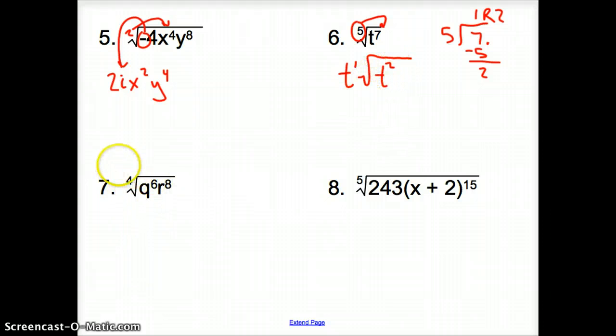Going to 7, same situation. We have an index of 4. 4 goes into 6 how many times? Just once. So we can only bring one q out. How many times does this 4 go into 8? It goes in there twice. So we have r squared times the square root of, how many q's do we have left? So 4 goes into 6 one time with a remainder of 2 for our final answer.